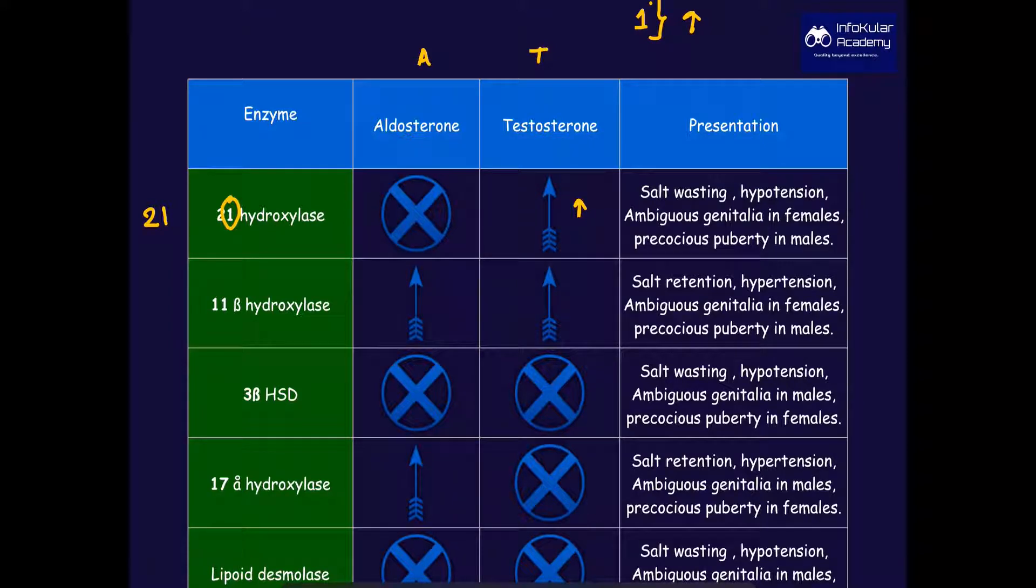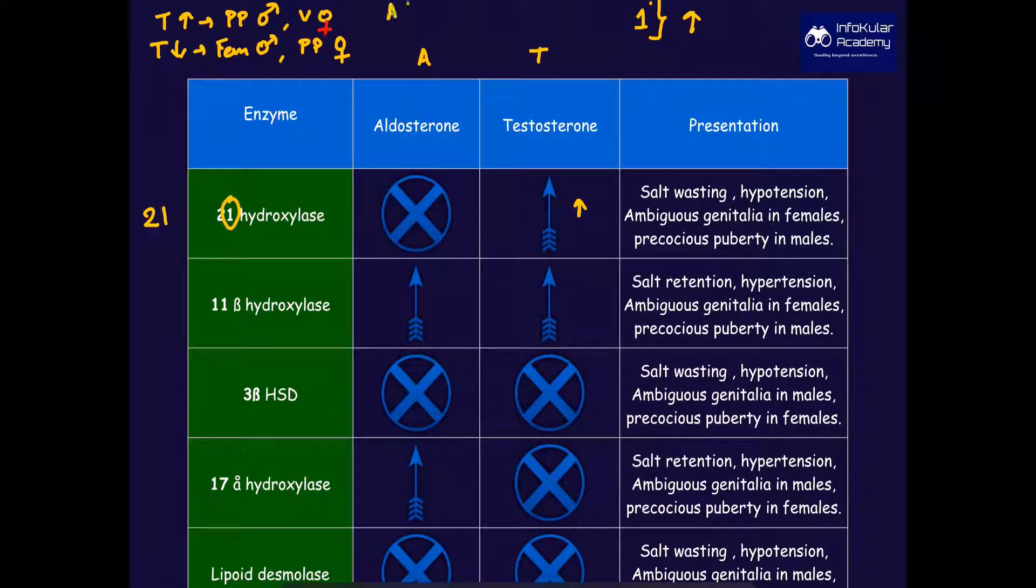You should be knowing that whenever there is testosterone increase, this will lead to precocious puberty in males and virilization in females. Whenever there is testosterone which is decreased, it will lead to feminization of men and precocious puberty in females. Similarly, whenever there is aldosterone increased, this will lead to salt retention, and whenever there is aldosterone decreased, this will lead to salt wasting.